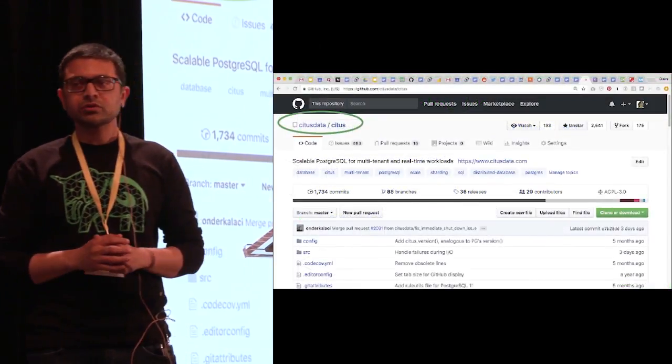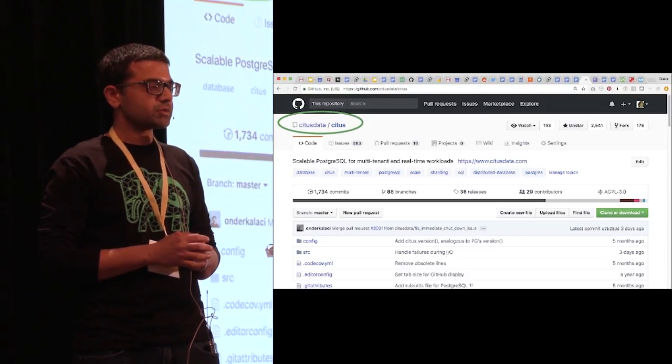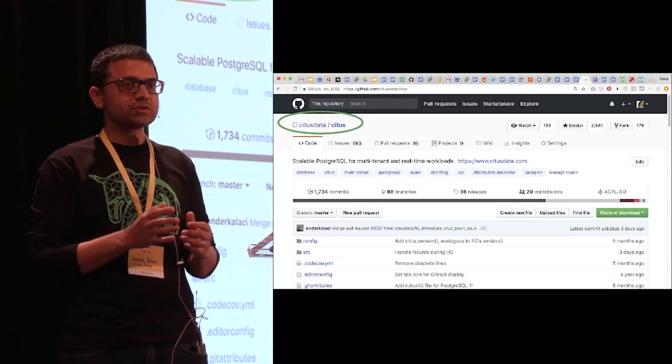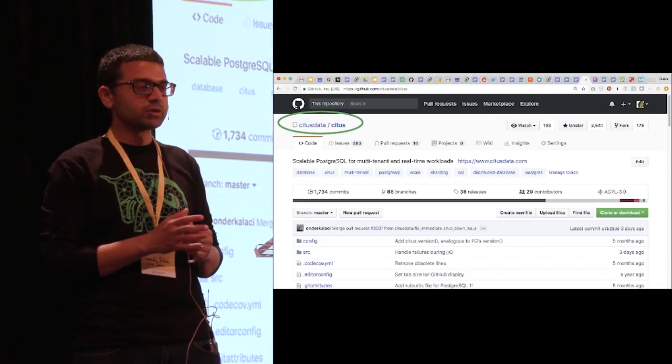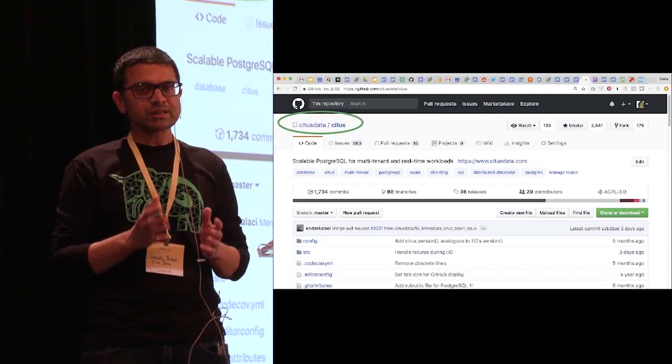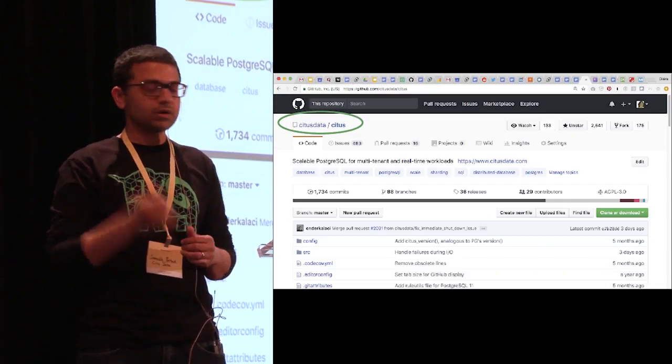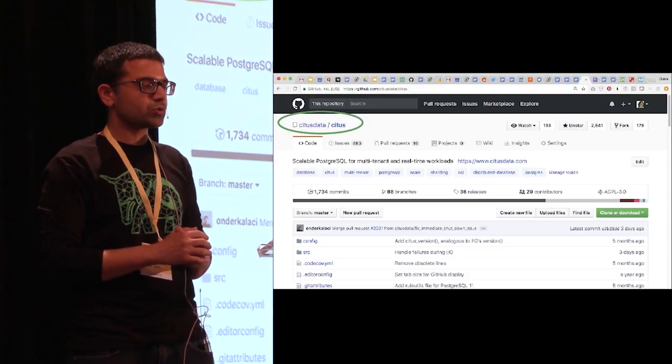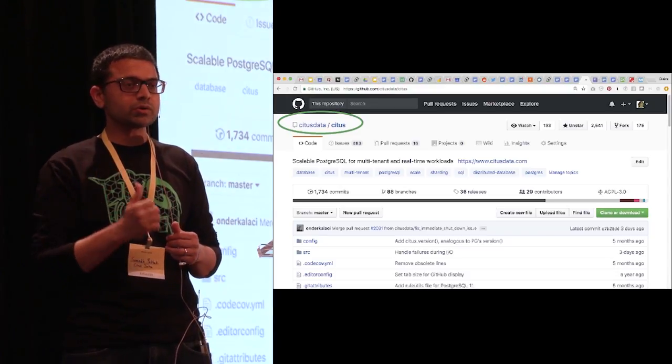Citus, as I mentioned, is an open source database. It's an extension for PostgreSQL which provides distribution and parallelization capabilities. Simply put, it scales out PostgreSQL. That's our GitHub page, so go check it out. You can download it and try it out.